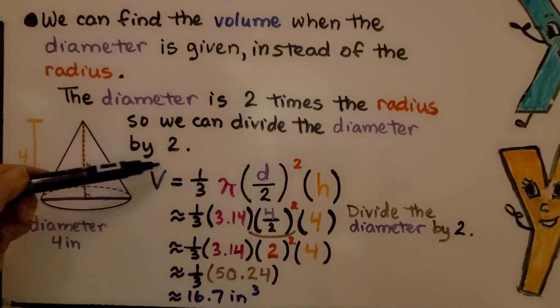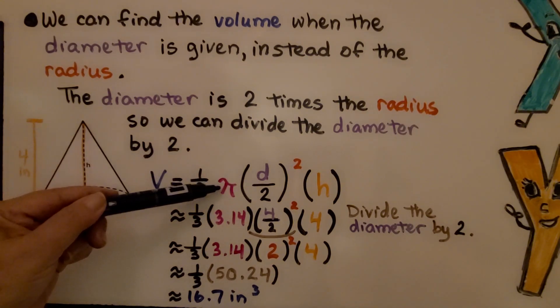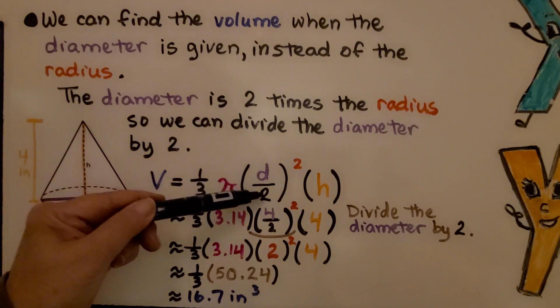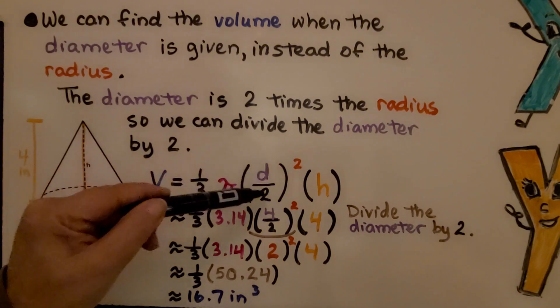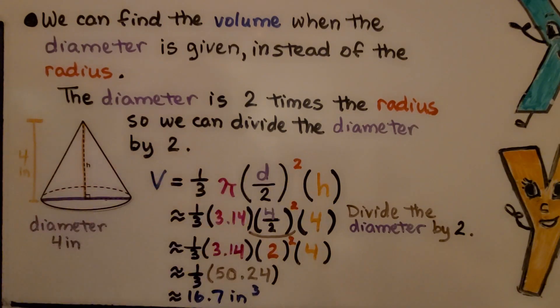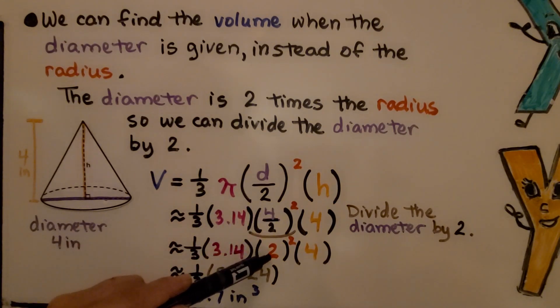We can do volume is equal to 1 third pi times the diameter divided by 2 squared. That would be for the radius squared and we multiply that by the height. If the diameter is 4, well then the radius is 2 and we do 2 squared for r squared.